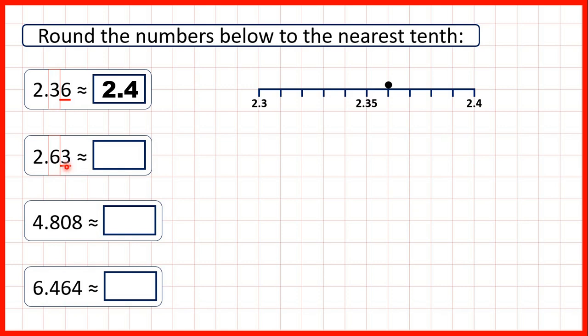We have a three and when we have four or less we round down. So that means the tenths digit stays the same. So we have 2.6 because the two in the ones stays the same as well.